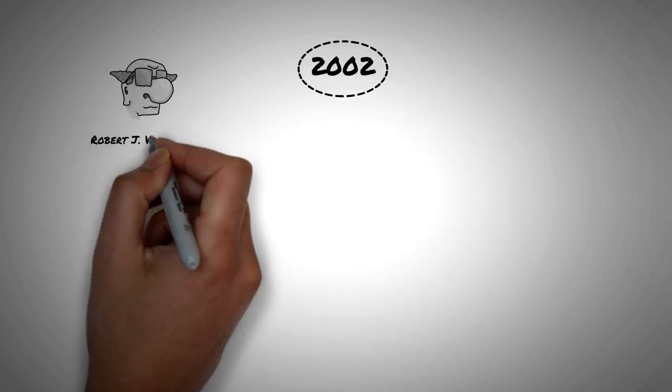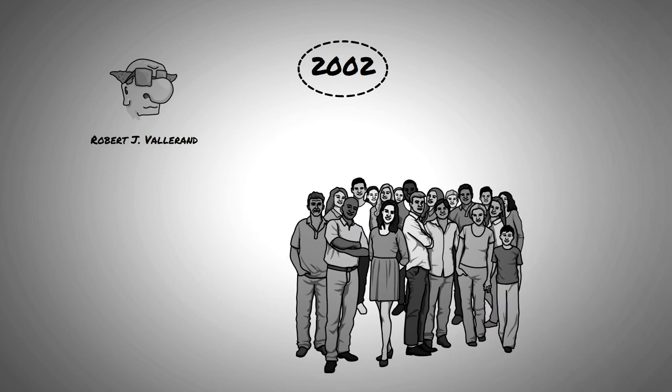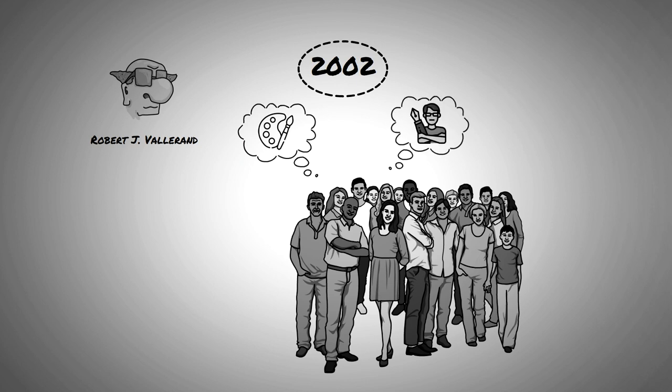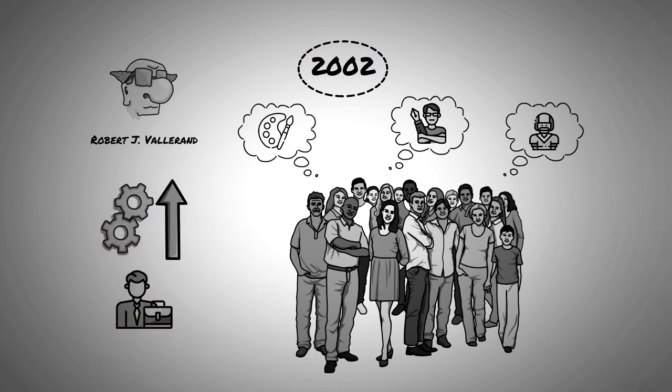In addition to that, in 2002, a psychologist by the name of Robert Valerant discovered that most people don't have an occupational passion. Instead, most people's passions are hobby related. But thankfully, research found that the occupational passion can be developed, which suggests that all jobs have the potential to be enjoyable and passion satisfying.